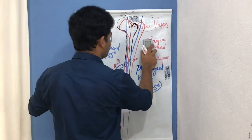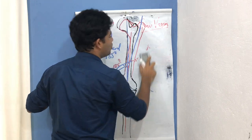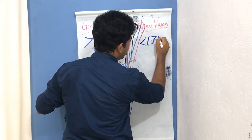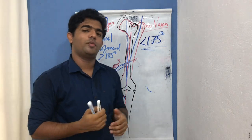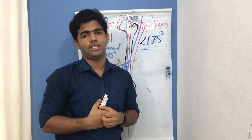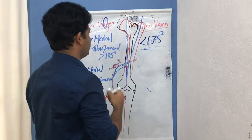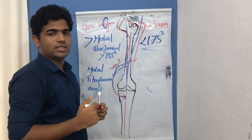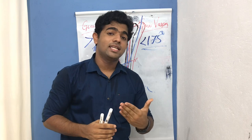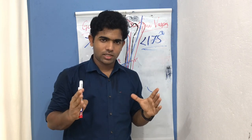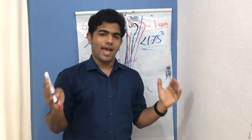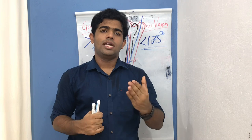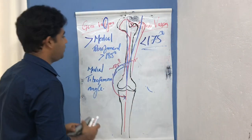Genu varum is the opposite condition. It is a decrease in the medial tibio-femoral angle to less than 175 degrees. When the medial tibio-femoral angle decreases below 175 degrees, the femur shifts to the medial side, producing genu varum. So: valgum means increased medial tibio-femoral angle, varum means decreased medial tibio-femoral angle less than 175 degrees.